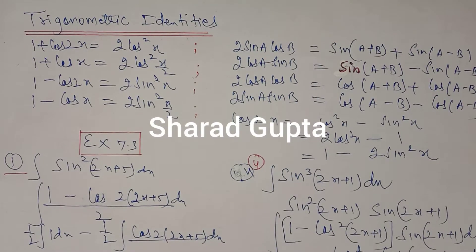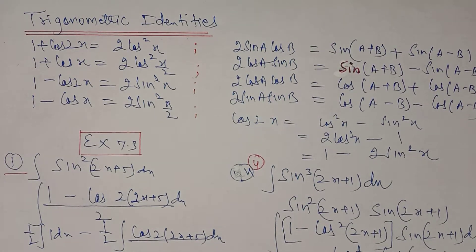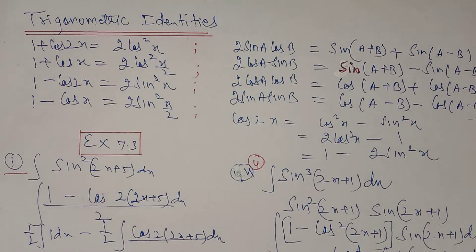Hello, this is lecture number five of the chapter on integration. In the last lecture we discussed the second exercise on integration by substitution. The third exercise is integration based on using the trigonometric identities which you have done in class 11. I'm discussing some of them.